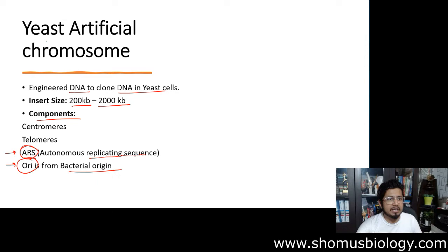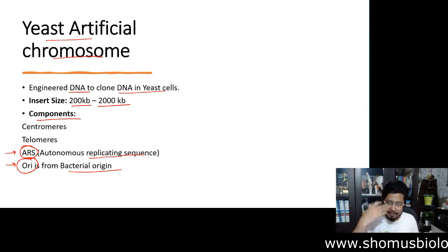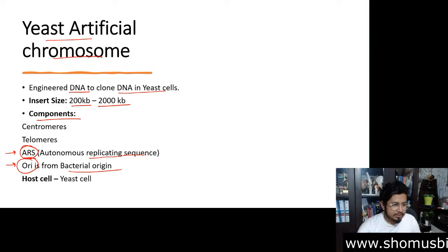Because this Yeast Artificial Chromosome, this particular vector can be maintained in bacteria as well as it can be maintained in the Yeast. The host cell is although in this case is the Yeast, but we can still maintain that in the bacteria for checking. That's why we have origin of replication in bacteria.